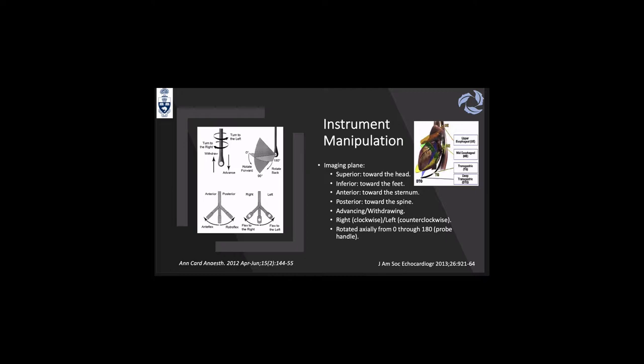On top of those movements, you can rotate the omniplane from 0 to 180 degrees. The directional terminology: superior means towards the head, inferior towards the feet — advance and withdraw. Anterior and posterior are achieved with anteflexion and retroflexion: anteflexion is anterior towards the sternum, retroflexion is posterior towards the spine. You can rotate clockwise towards the right or counterclockwise towards the left, and rotate the omniplane from 0 to 180 degrees.